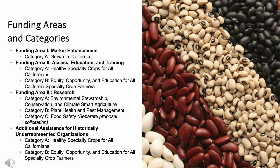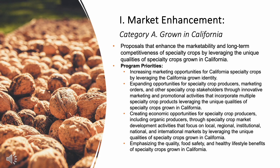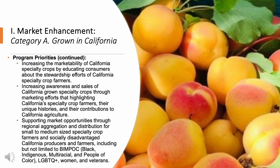The program priorities are listed in the following slides but most importantly can be found in the RFCP. Within the market enhancement funding area, there is only one funding category: Category A, called Grown in California. Proposals submitted to this category should enhance the marketability and long-term competitiveness of specialty crops by leveraging the unique qualities of specialty crops grown in California — highlighting what makes them distinctive because they are grown in California. There are seven program priorities within this funding category. Please reference the RFCP and read each one carefully to determine which program priority or priorities are appropriate for your project.